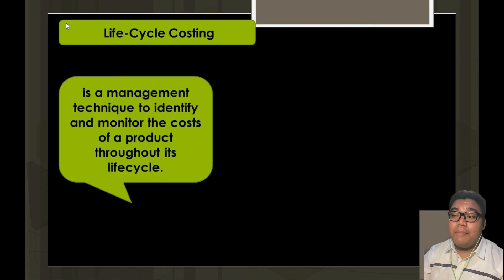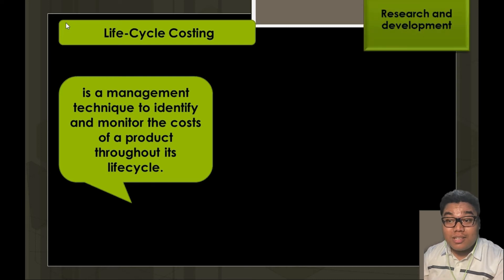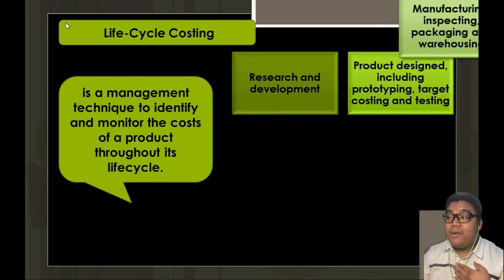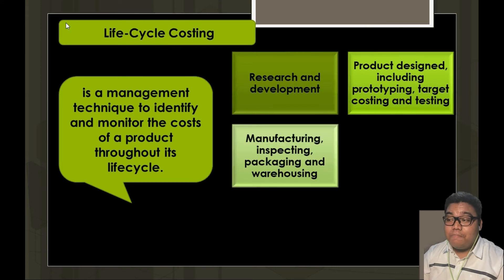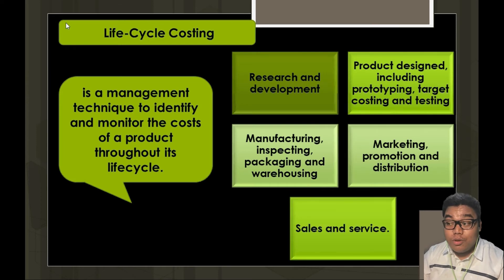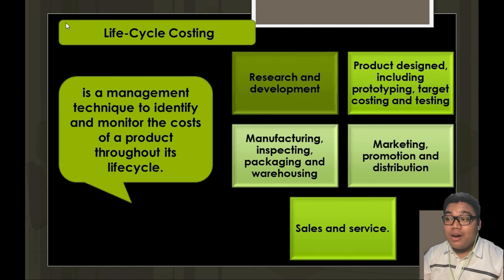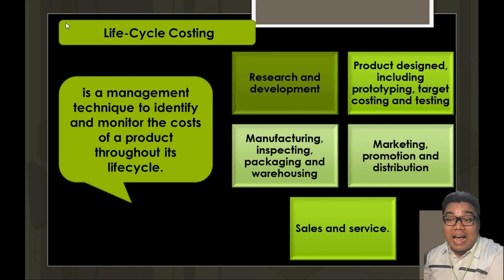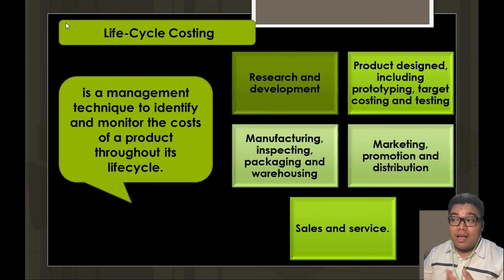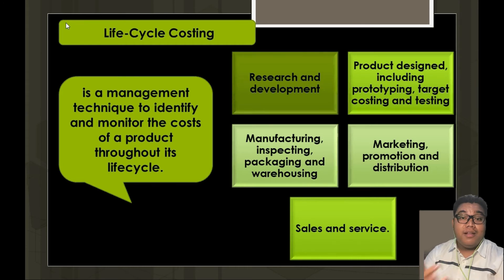Life cycle costing is a management technique to identify and monitor the cost of a product throughout its life cycle — from development up to sales. This covers research and development, product design, manufacturing, inspecting, packaging and warehousing, marketing, promotion, distribution, sales, and after-sales efforts. It is important to determine costs from the R&D phase through the after-sales phase to assess whether the product is actually generating profit or causing the company to lose money.